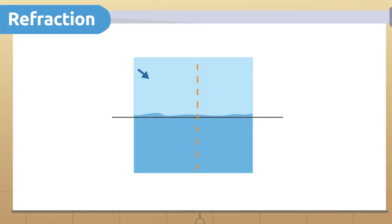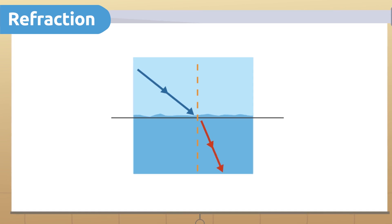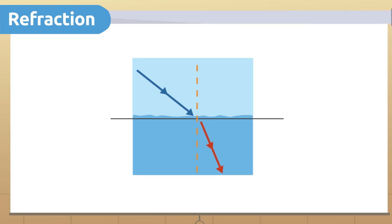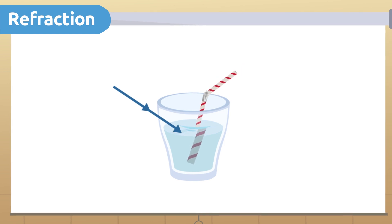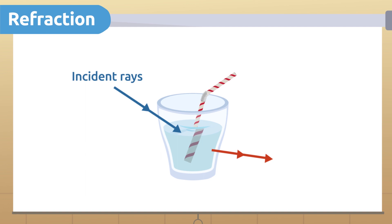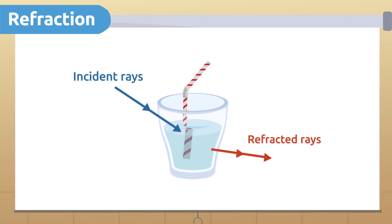When light rays pass from one medium to another, for example, from air to water, they change their speed and direction. This is how refraction happens. The light rays that reach an object are called incident rays, and the light rays that change their trajectory or velocity are called refracted rays.